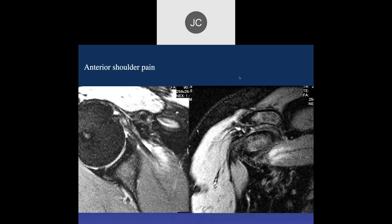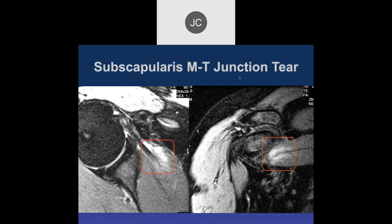On PD fat sat images looking at the subscapularis distally, there's some edema medially in the muscle — so that's a tear. Just remember, especially in young athletes with big muscles, tears of the muscle itself can cause shoulder symptoms.